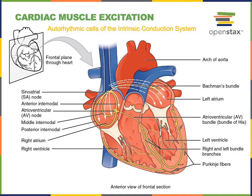The SA node is located in the right atrium at the entrance of the superior vena cava. The sinoatrial node, or SA node, generates an action potential and that action potential will spread from the autorhythmic cells into the contractile cells, because the cells of cardiac muscle are connected by gap junctions. These gap junctions allow the action potential to spread from cell to cell, and so when the SA node fires an action potential, that action potential will spread throughout the myocardium in the atria, stimulating atrial contraction.